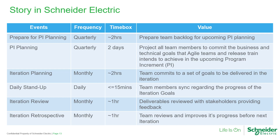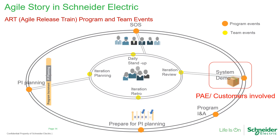At the end of each iteration, we have a system demo as an iteration review, where the deliverables are revealed to stakeholders and related customers are invited. The system demo is the most important event — customers or product application engineers are directly involved. They review the new deliverable features and provide comments. If necessary, these features will be adjusted during the next iteration.